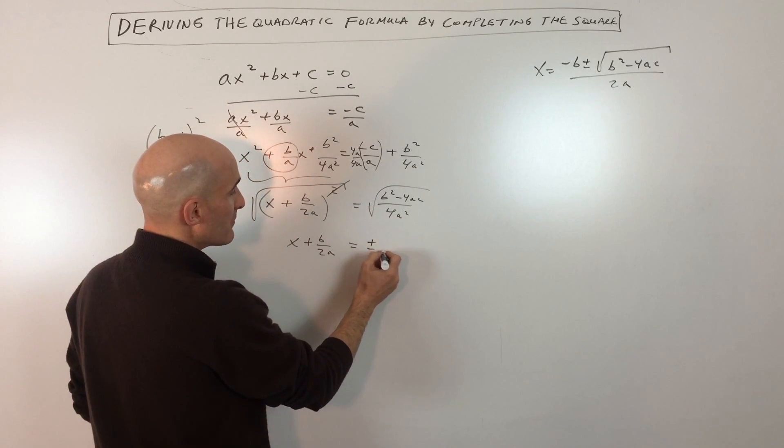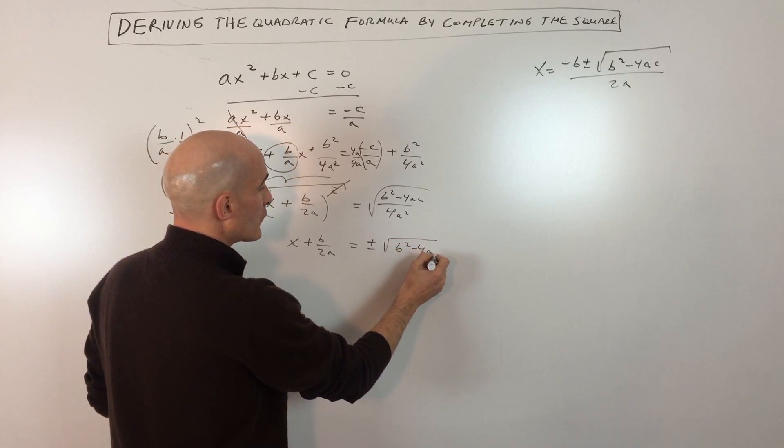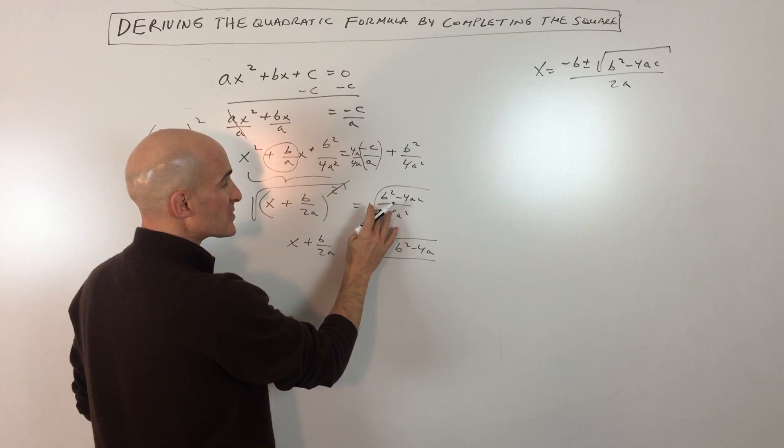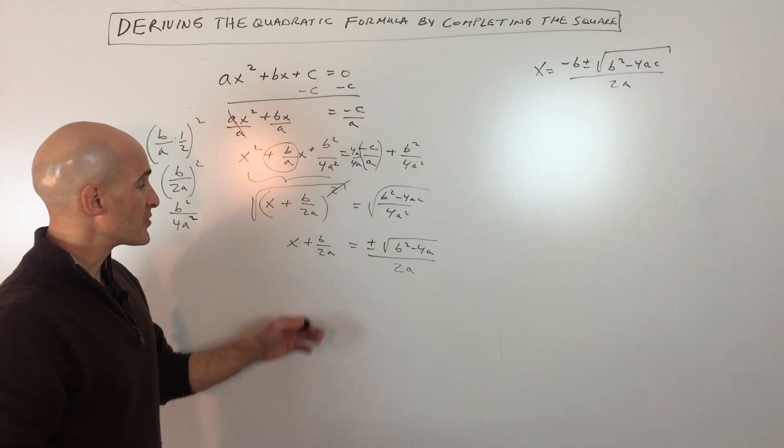you get plus or minus the square root of b squared minus 4ac, all divided by, now the square root of 4a squared is just 2a, so we can simplify that part of the square root.